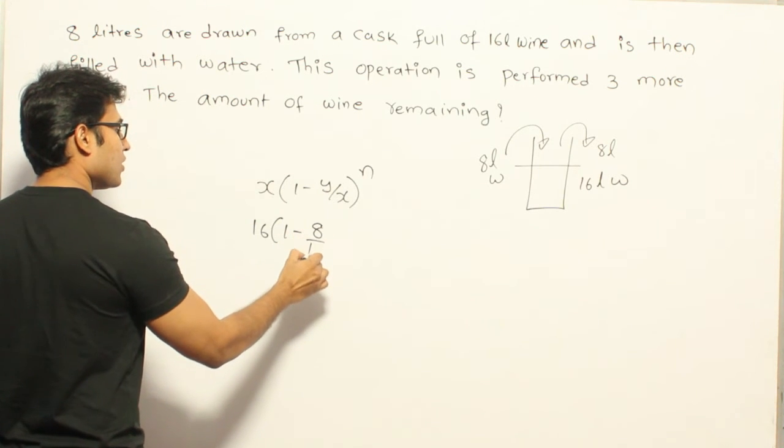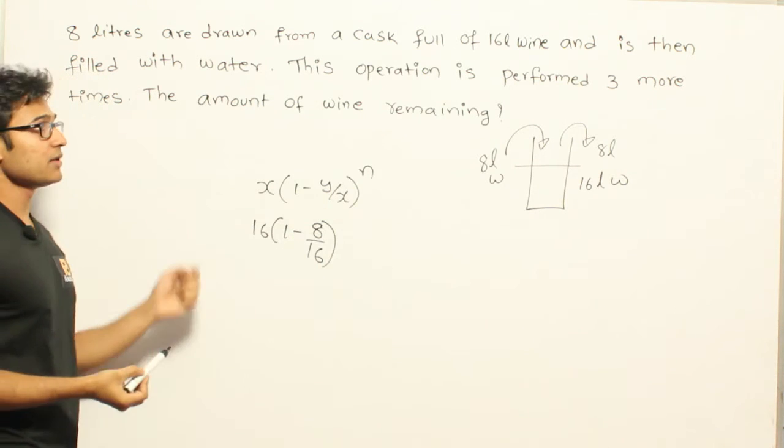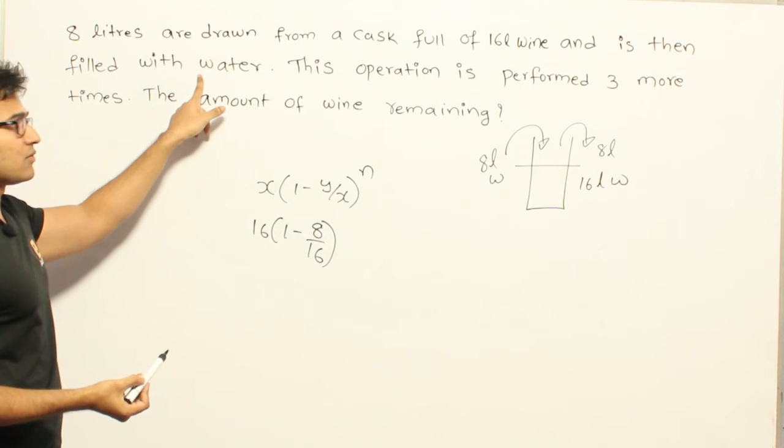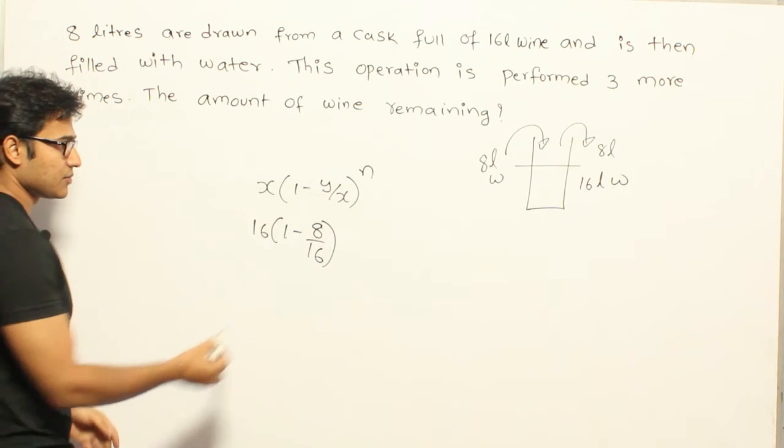So 8 and x we already know is 16, whole power n. N is the number of times you are doing it. They are saying that initially they done it once, and then they are repeating it 3 times. Therefore overall they are doing it for 4 times.